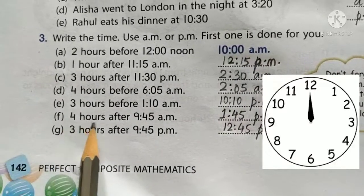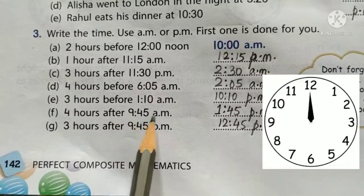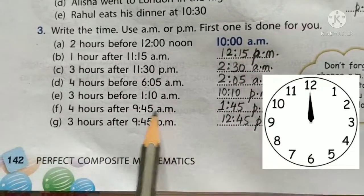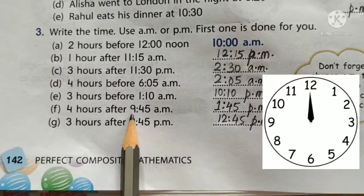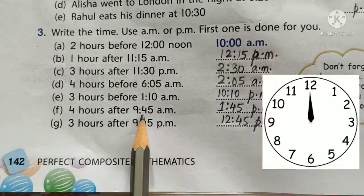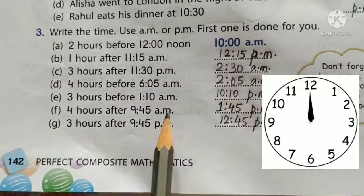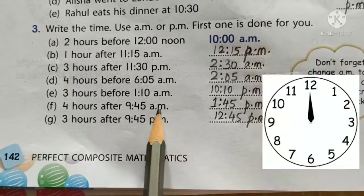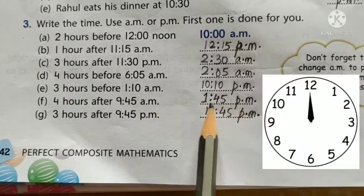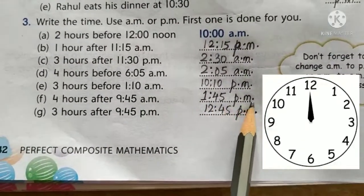4 hours after 9:45 AM. After 9 is 10, 11, 12, and then 1. We have crossed 12, so AM becomes PM — the answer is 1:45 PM.